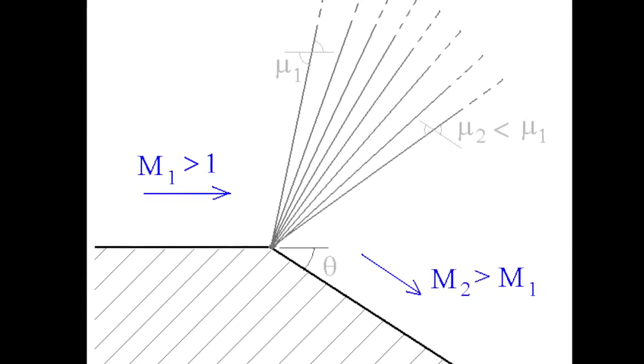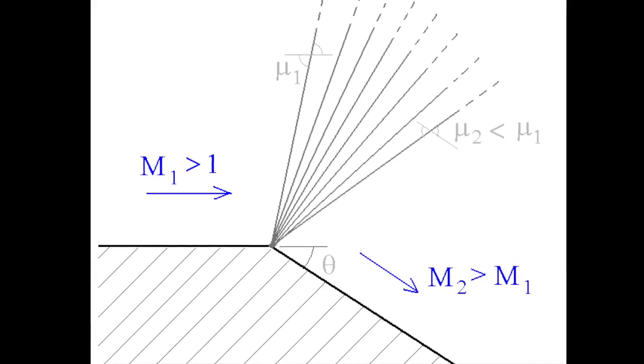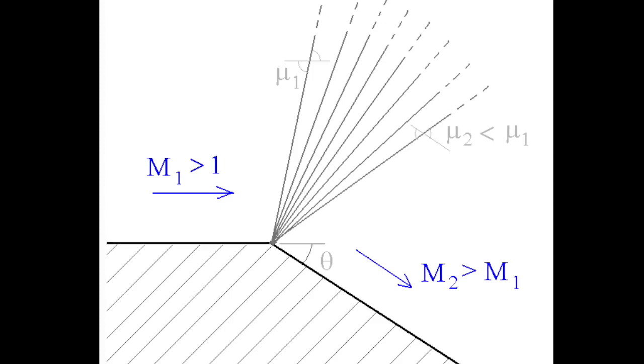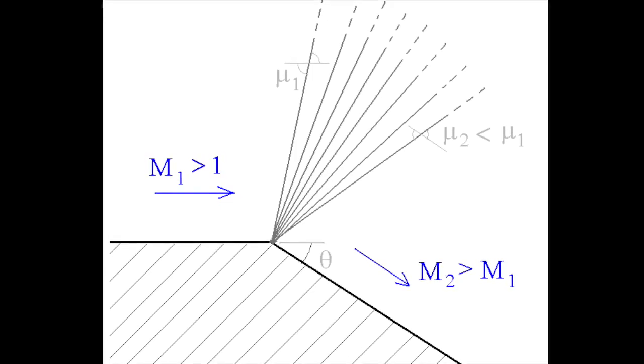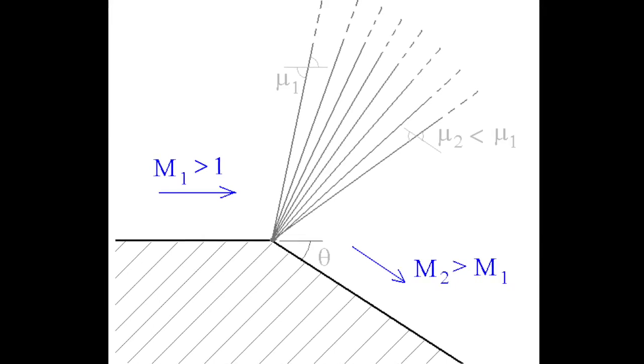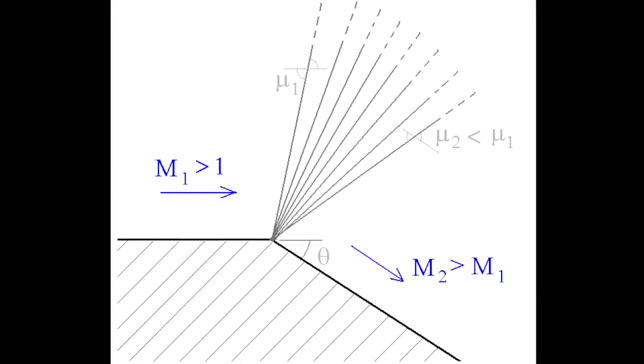In contrast to discontinuities across a shock wave, all flow properties through an expansion wave change smoothly and continuously with the exception of the wall streamlines which changes discontinuously at point center.